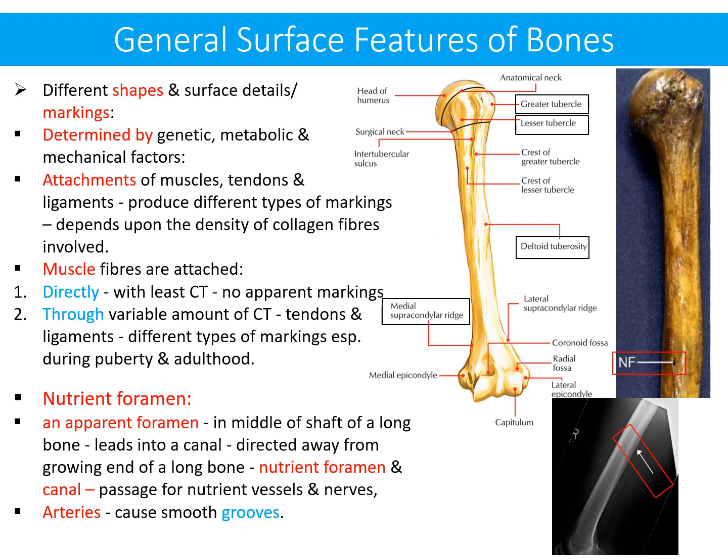The nutrient foramen leads into a canal directed away from the growing end of the long bone. The nutrient foramen and canal serve as passage for nutrient vessels and nerves. When arteries come in contact with bone, they produce smooth surface grooves only.